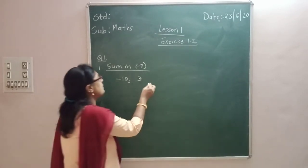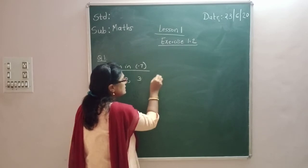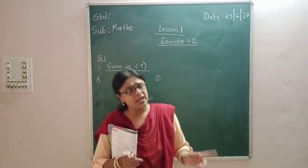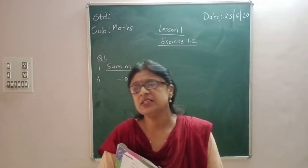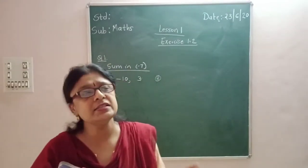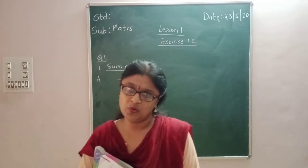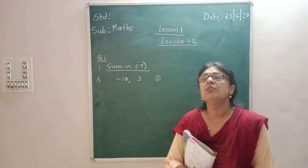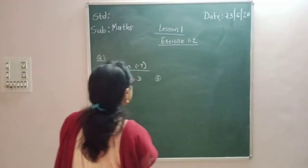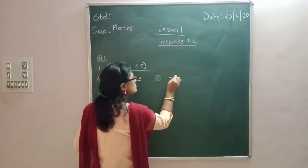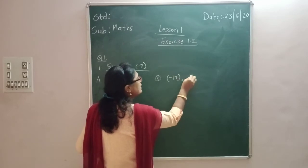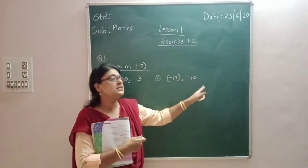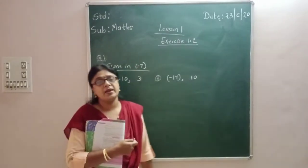Another example — can anybody tell me any two integers such that when I add those two integers I get the answer as minus 7? Suppose if I take minus 17 as one integer and 10 as another integer, then minus 17 plus 10 gives the answer as minus 7.